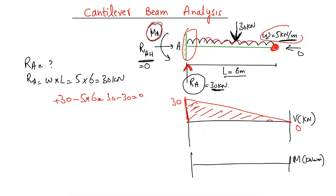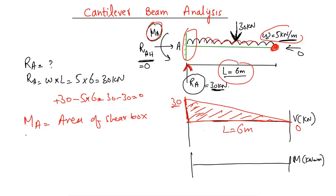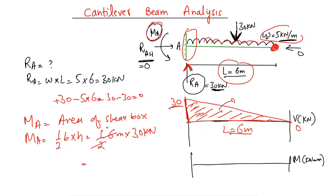For the bending moment, there is only a negative bending moment at the fixed support. To find it, we calculate the area of the shear force diagram. The shear force diagram is a triangle with height 30 kilonewtons and base 6 meters. The area of a triangle is half base times height: ½ × 6 × 30 = 90 kilonewton-meters.